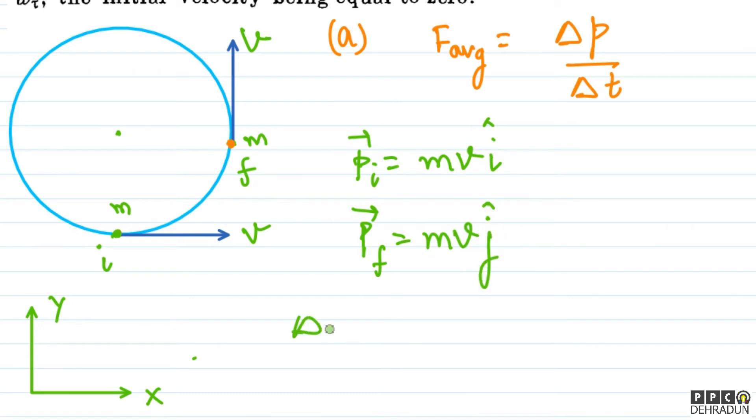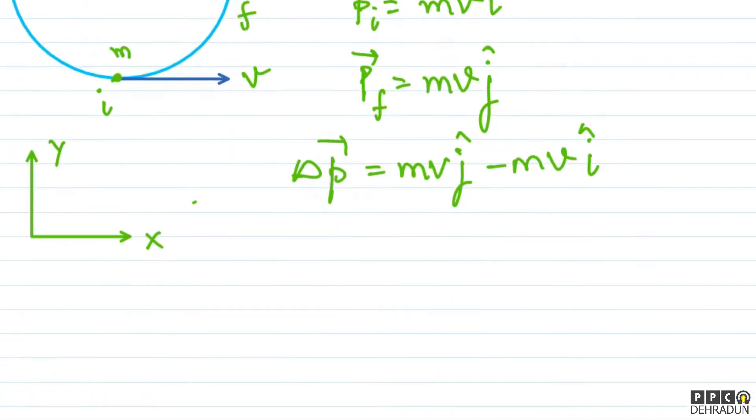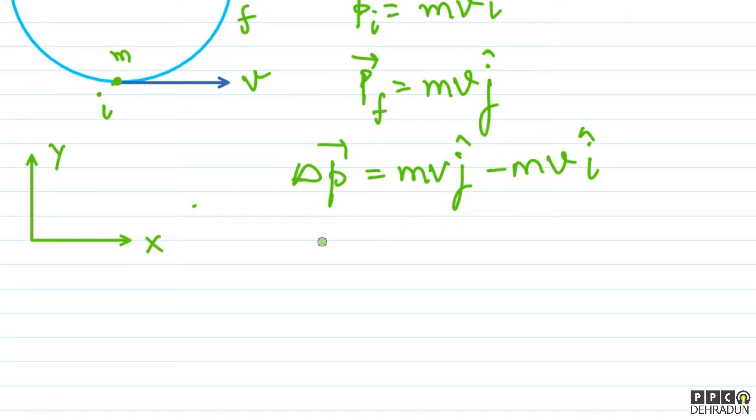Change in momentum vector - how much will it be? It will be mv j cap minus mv i cap. So we can see that the magnitude of change in momentum vector will be mv root 2, because both components are mv and mv. So mv root 2 will be the resultant, which is the change in momentum.